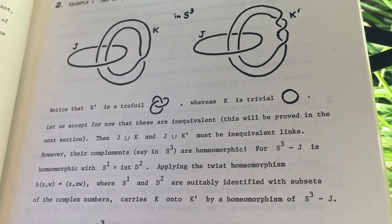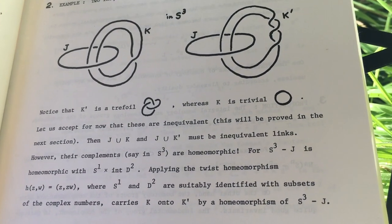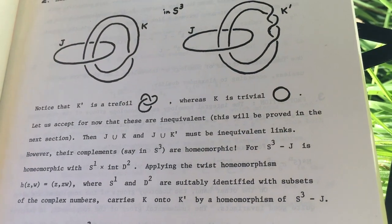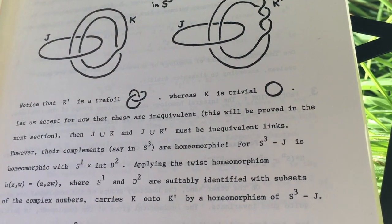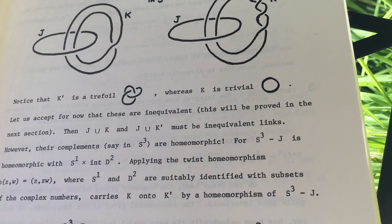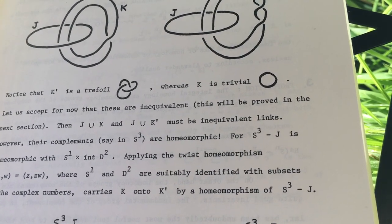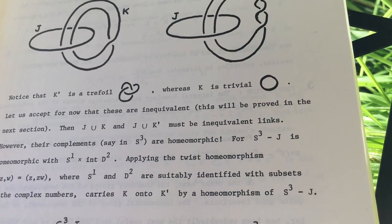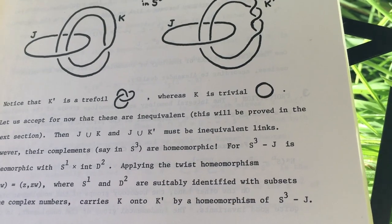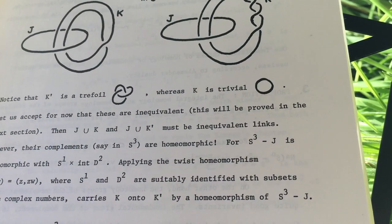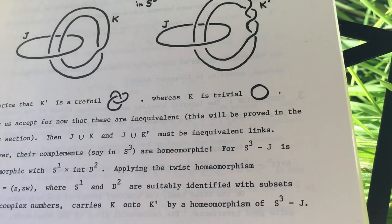J union K and J union K prime must be inequivalent links. I hope that's union — I know there's another one that's upside down. Right, okay, sure.